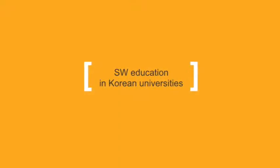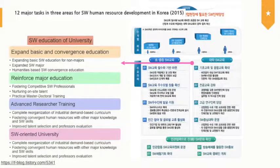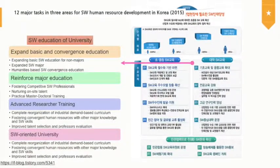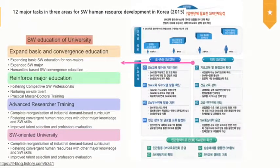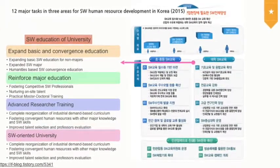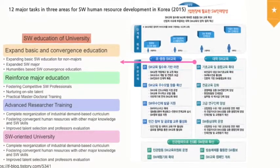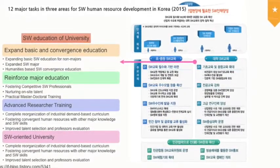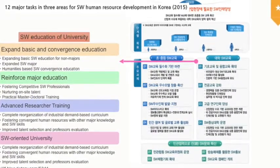I will translate these into English. I will explain the first and fourth aspects: expanding basic and convergence education, and the software-oriented university.